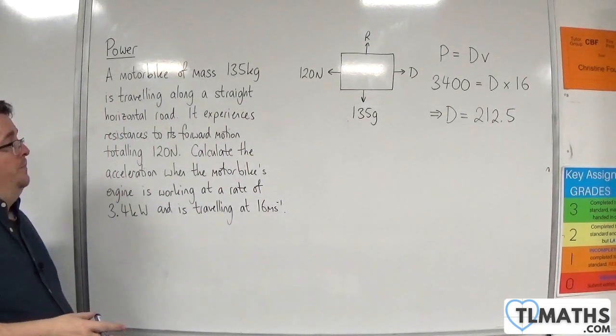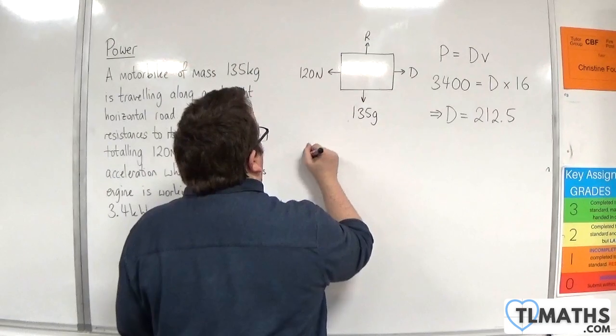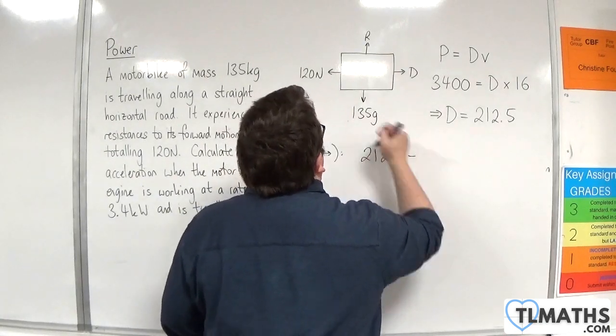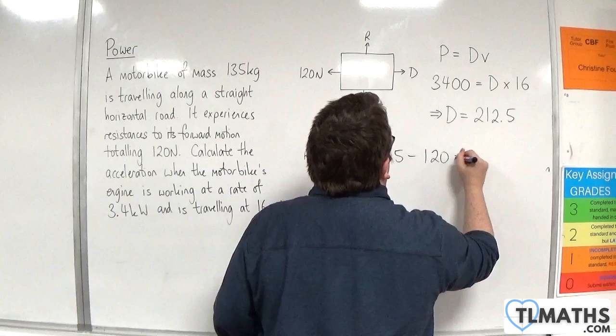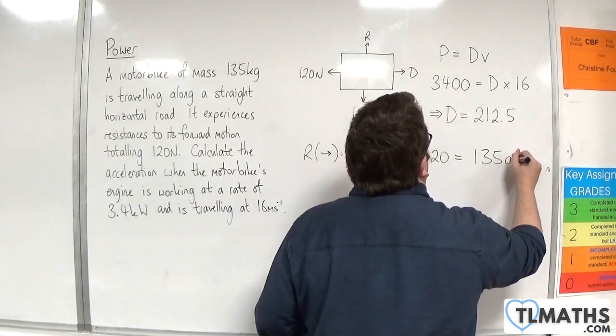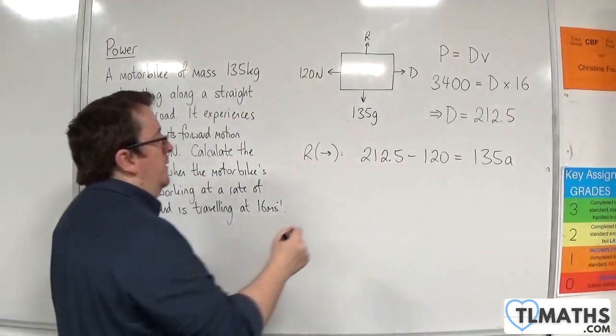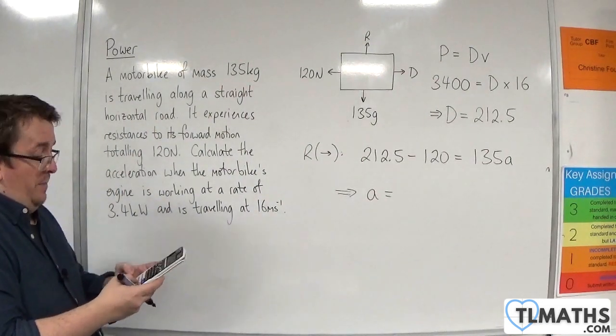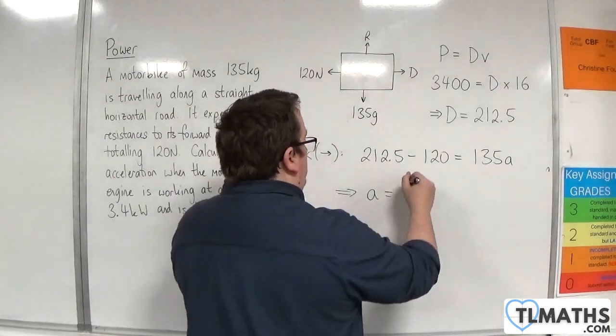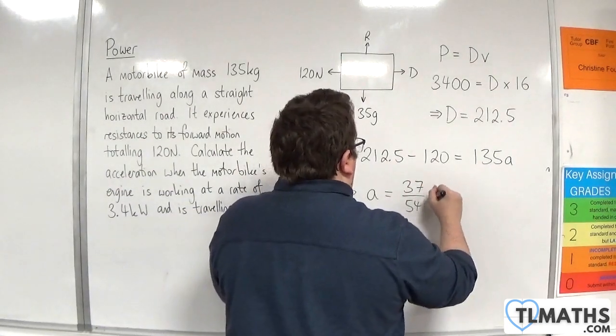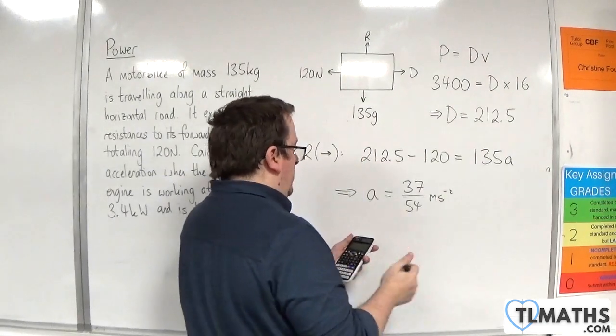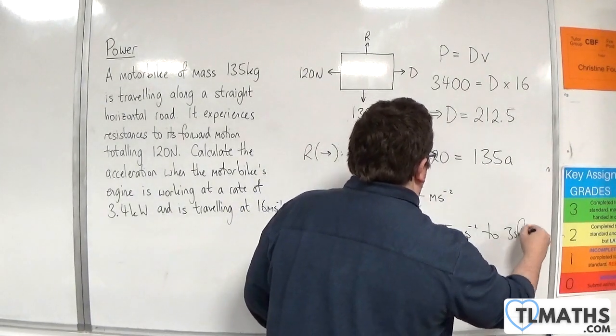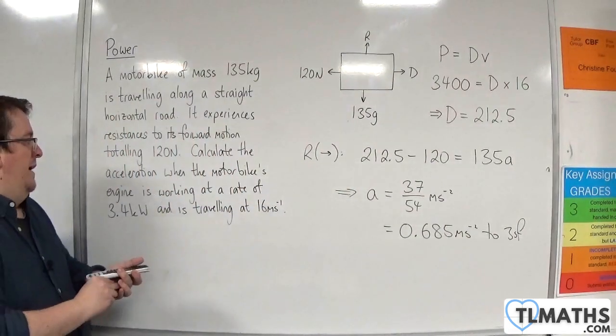And now we're going to use Newton's second law, F equals ma. So resolving to the right, we have d, so 212.5, take away the resistance, 120. It's going to be equal to the mass, 135, times by the acceleration which is what we want to find. So 212.5, take away the 120, and then divide by 135. We get 37 over 54 metres per second per second, which is equal to 0.685 metres per second per second to three significant figures.